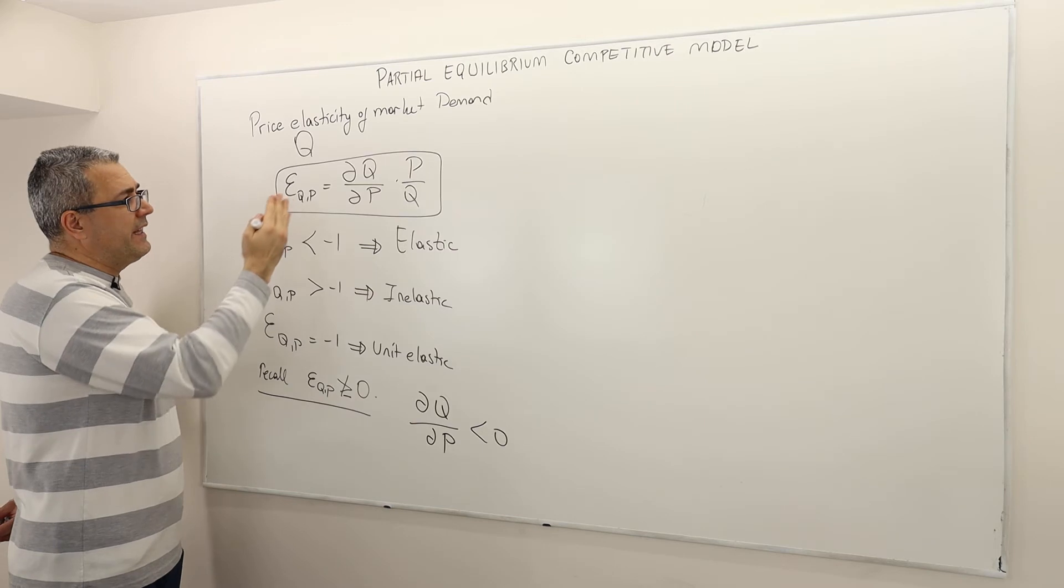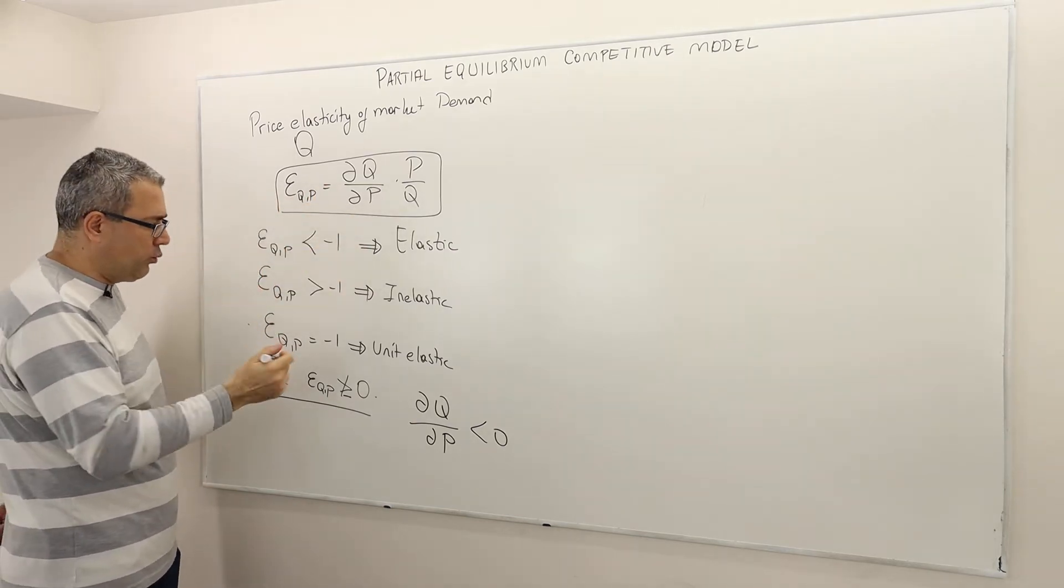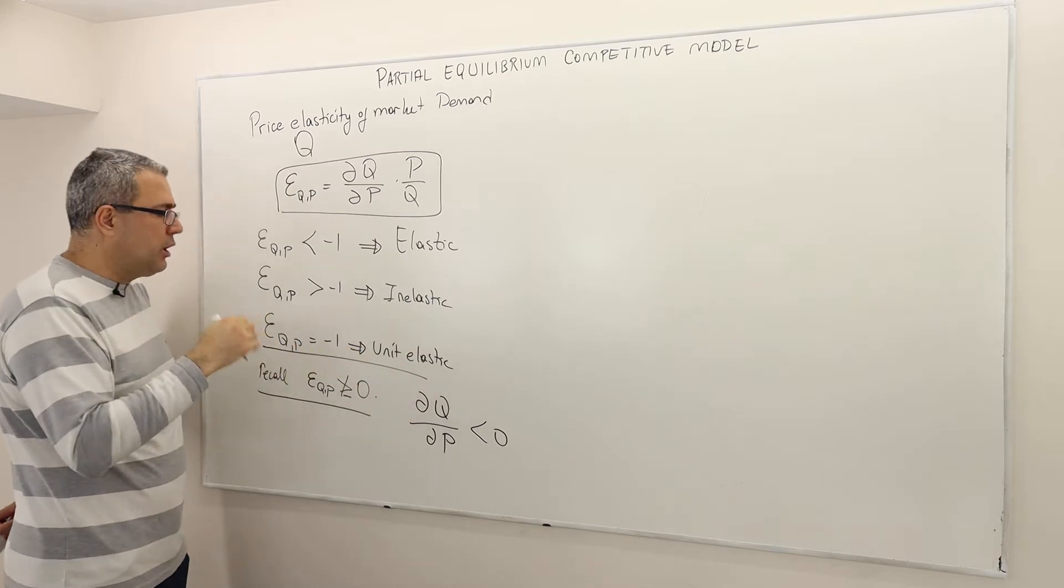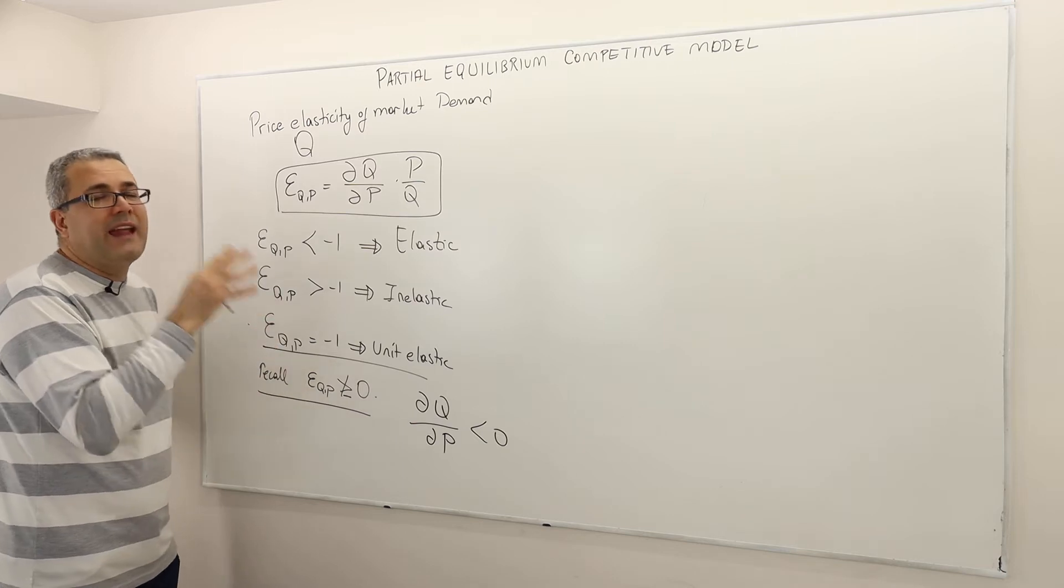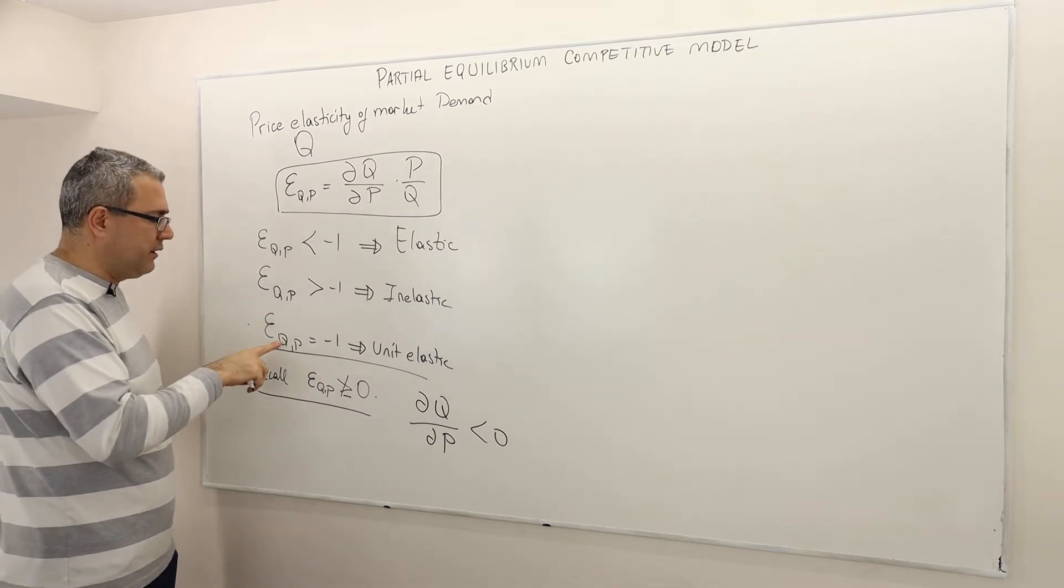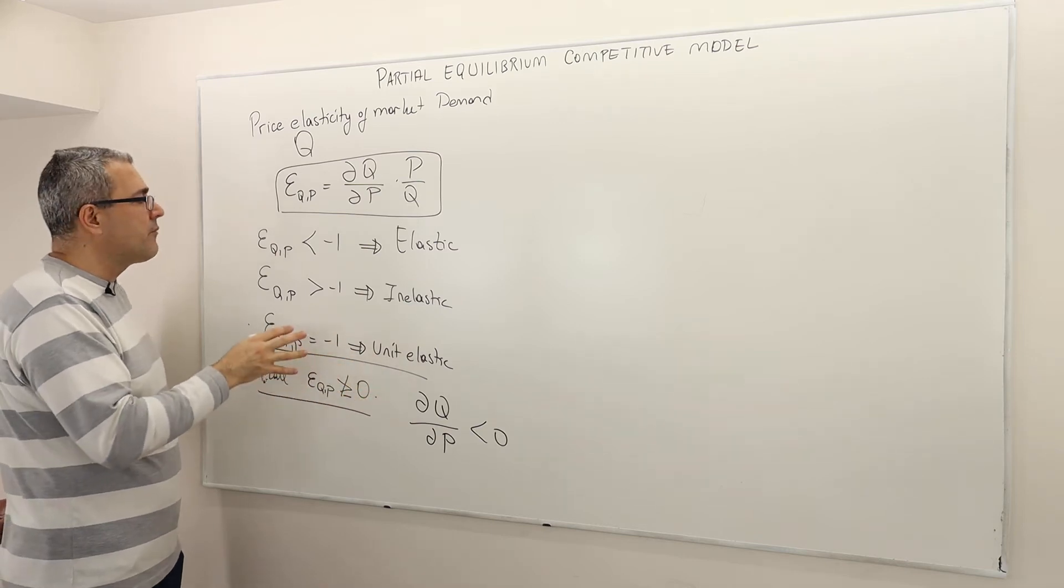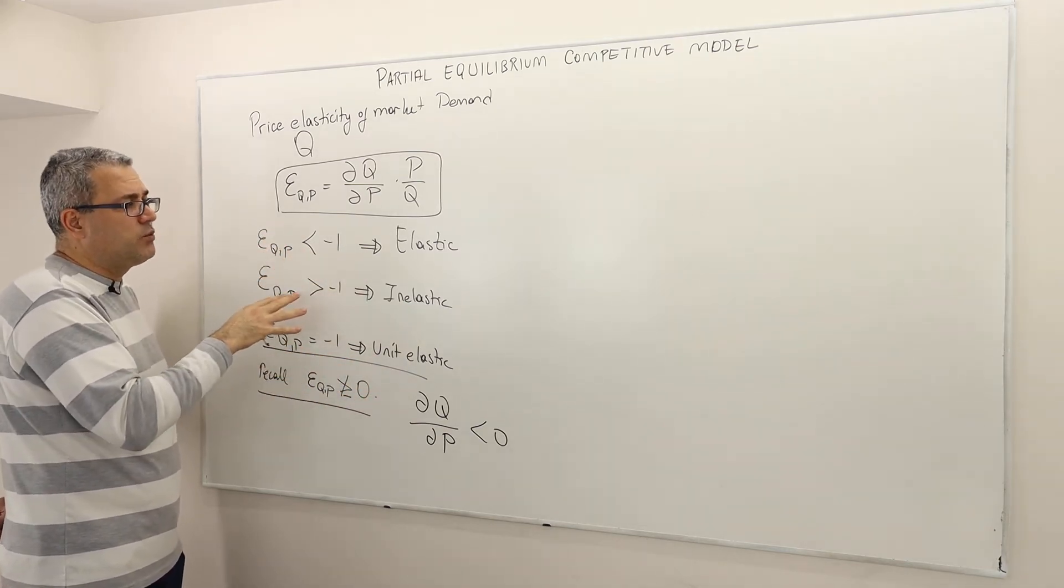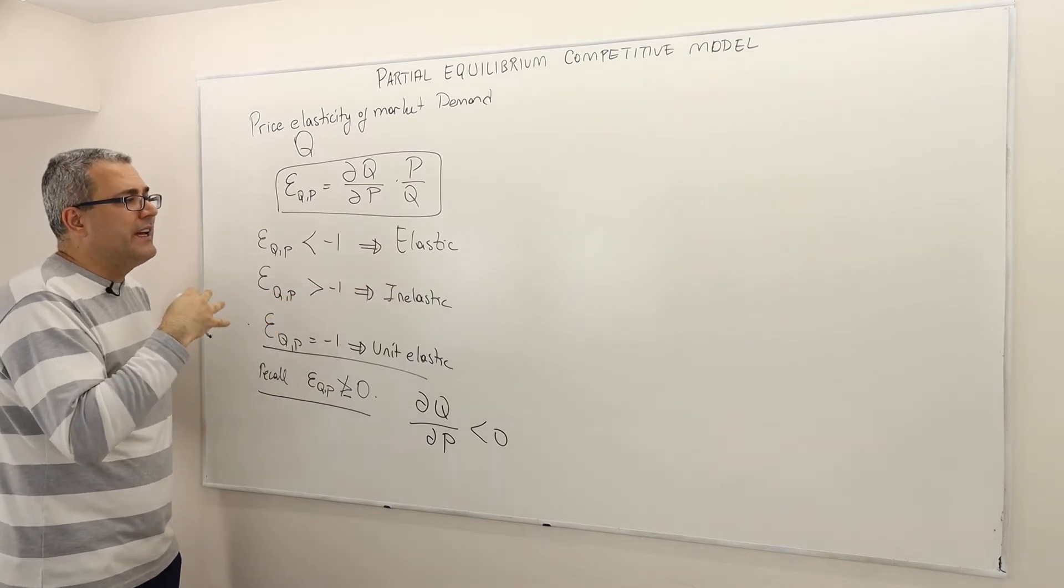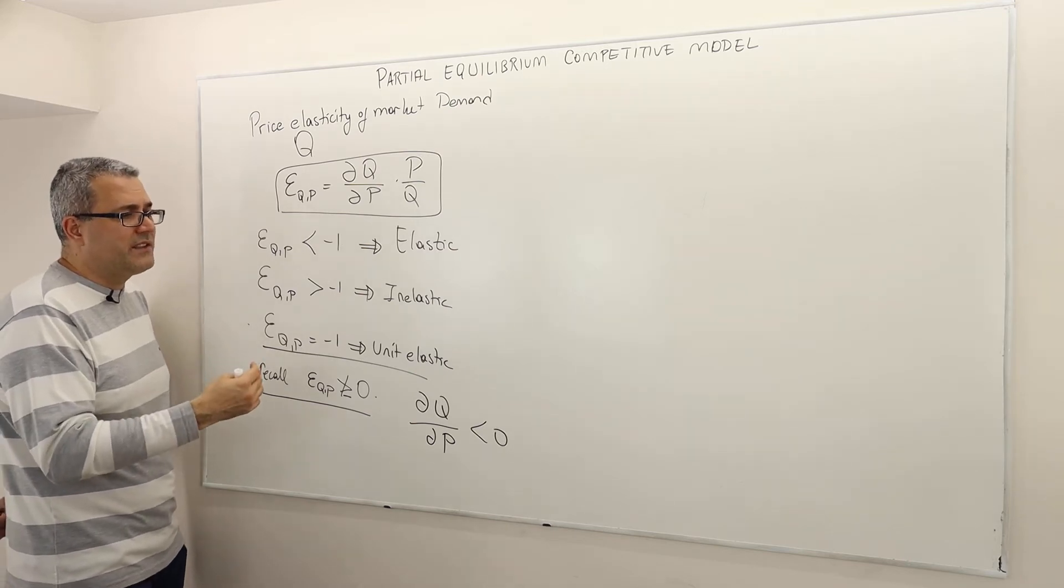Well, the elasticity equals minus one is kind of a critical point. We call goods where the elasticity at every QP level equals one, or at some particular level of P and Q, we call it unit elastic. If the elasticity is less than minus one, we call this good elastic. And if it is greater than minus one, we call it inelastic.